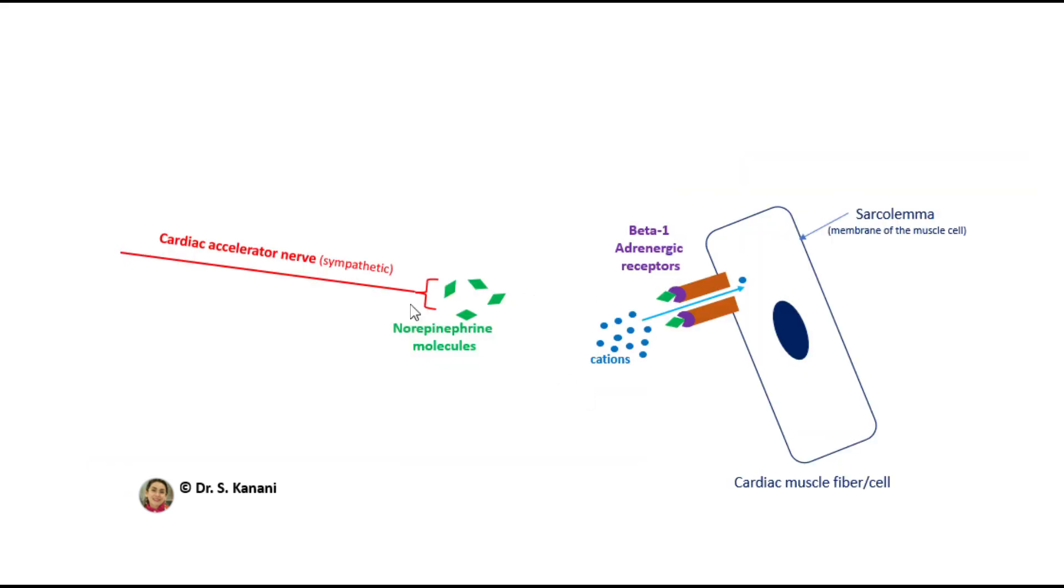Next, we focus on the end of cardiac accelerator nerves. And we notice that these sympathetic nerves release a neurotransmitter named norepinephrine.